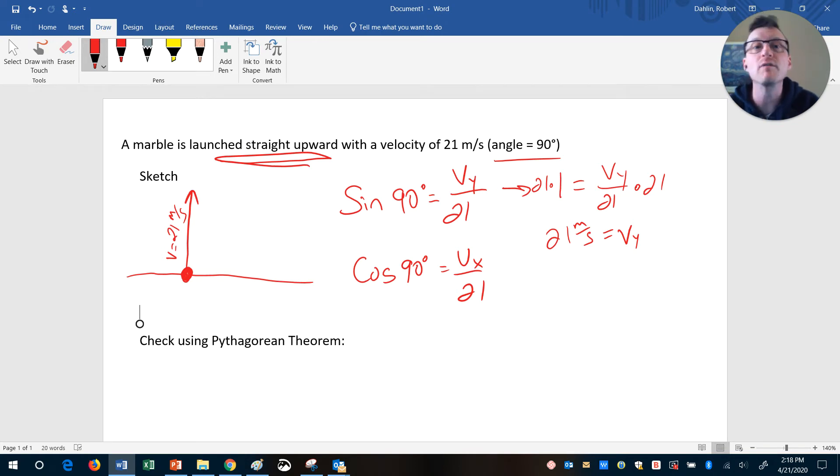Think about why that makes sense. All of the velocity is straight up. So if all of the velocity is straight up, all 21 of that is going to be the Y velocity.